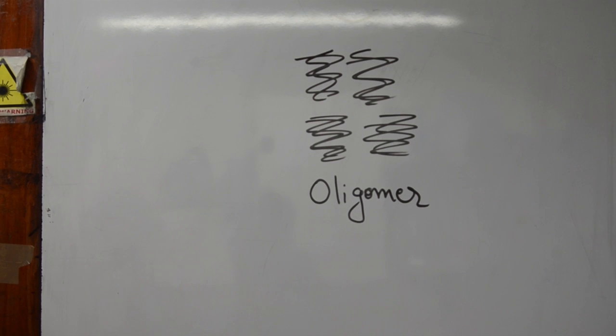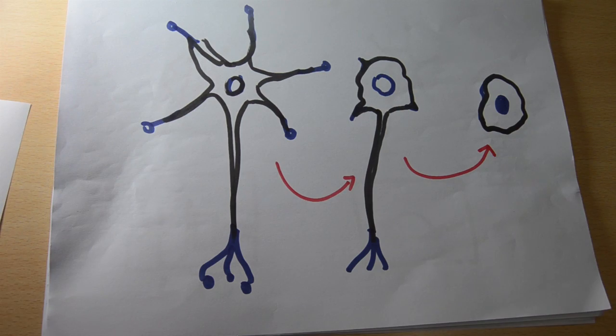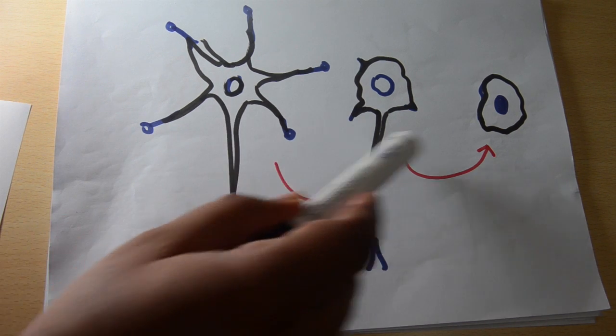Under certain conditions, these monomers form gangs. And these gangs called oligomers are the actual devils. The key question we are chasing is how does amyloid beta damage the brain cells?